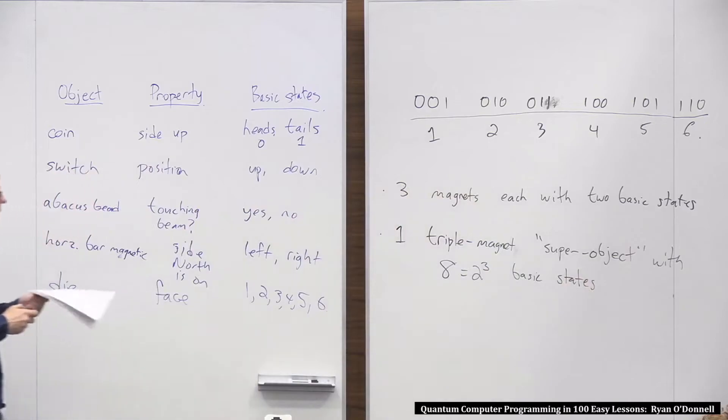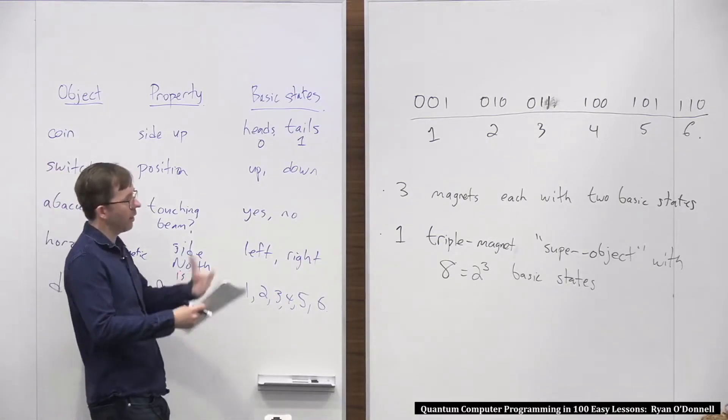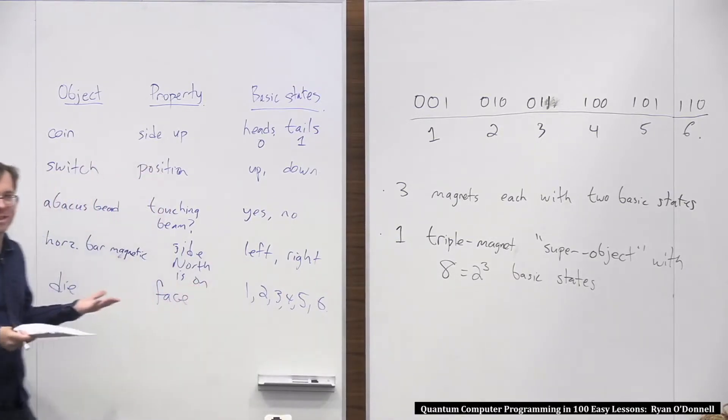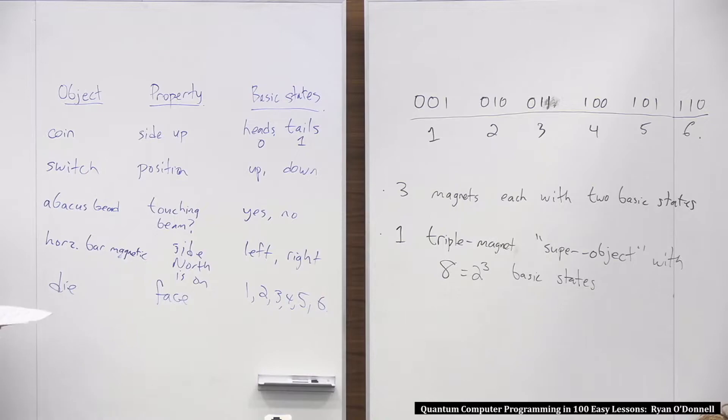Okay, so this would just be a system where zero, zero, one counts for one, and zero, one, zero counts for two, and zero, one, one is—okay, it's easier for me to write them like this first. Okay, three, four, five, six. Okay, and this is a simple way of how you might encode a more complex object, like a number between one and six using bits. But, you know, we're going to stick with bits, but I just want to say there's nothing overly special about two. It's just convenient.